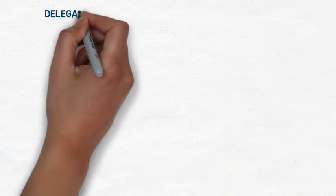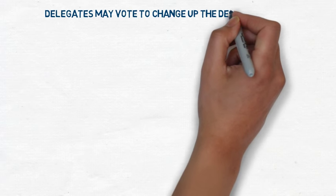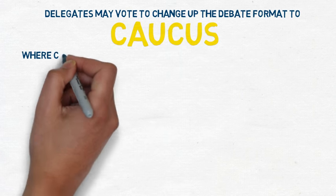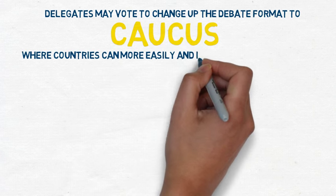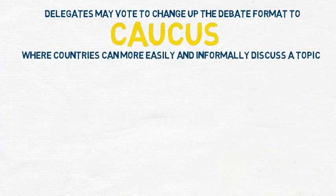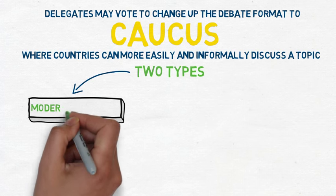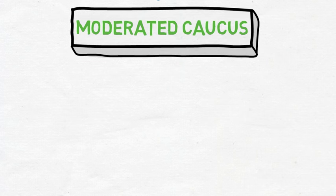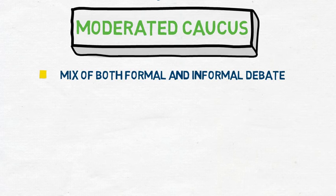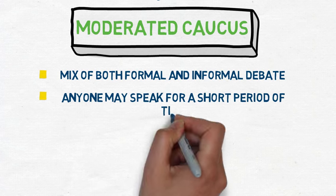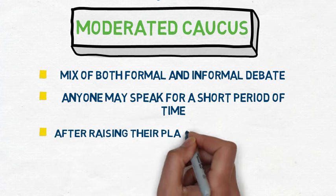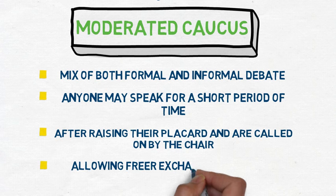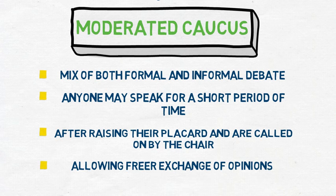After a certain number of speeches, delegates may vote to change the debate format to caucus — a temporary break in formal debate in which countries can more easily and informally discuss a topic. There are two types: moderated caucus and unmoderated caucus. A moderated caucus is a mix of both formal and informal debate, where anyone may speak for a short period of time if they raise their placard and are called on by the chair. This format enables a freer exchange of opinions than would be possible in formal debate.